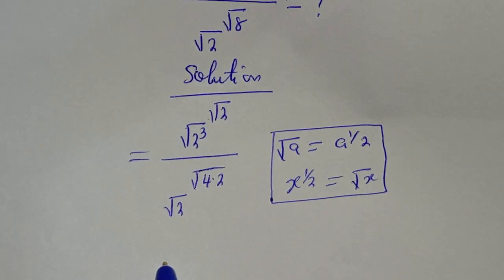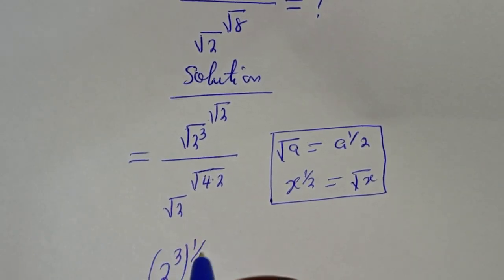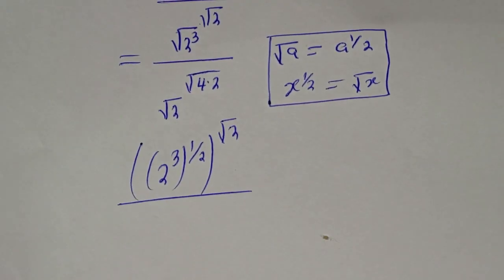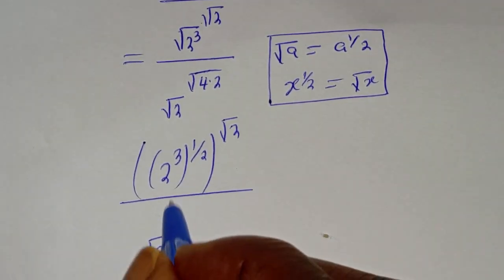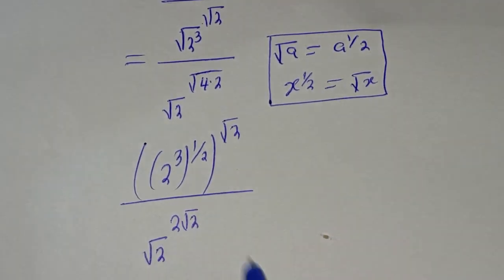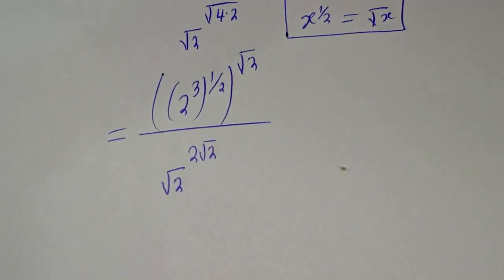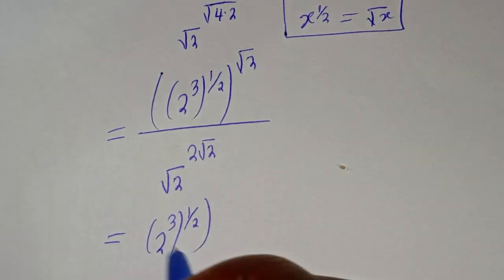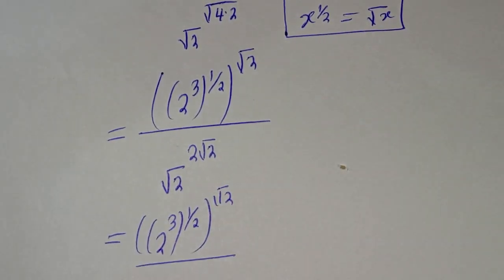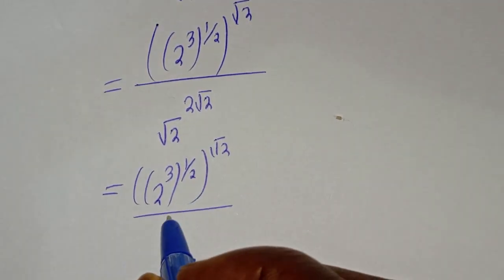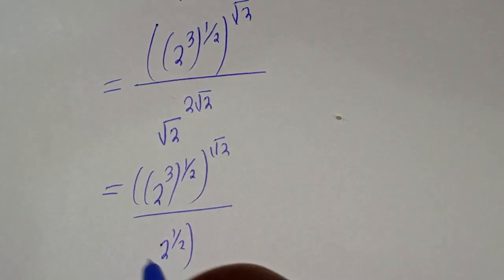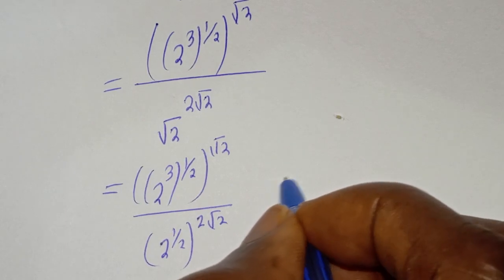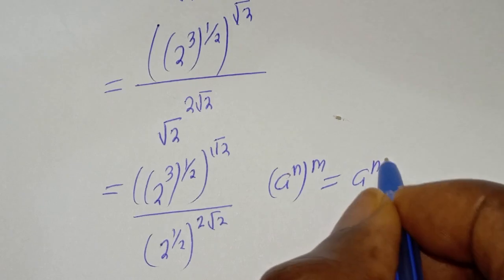Then this can be written as 2 raised to power 3, to the power of 1 over 2, multiplied by 2 to the power of square root of 2, divided by square root of 2 to the power of 2 times square root of 2. Take note of this rule: if you have a raised to power n, to the power of m, this is equal to a raised to power n times m.